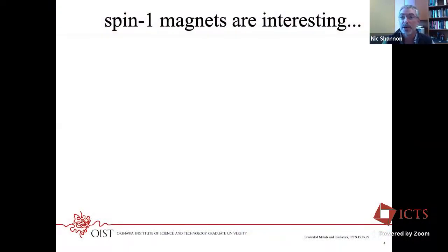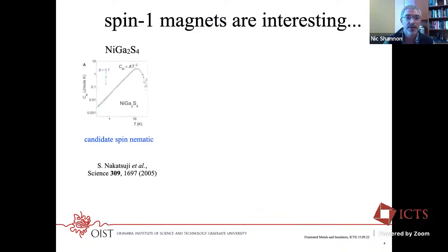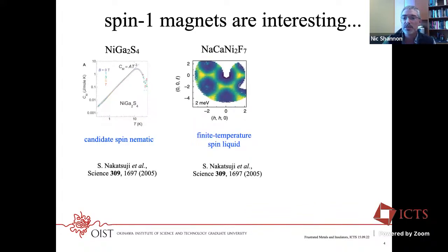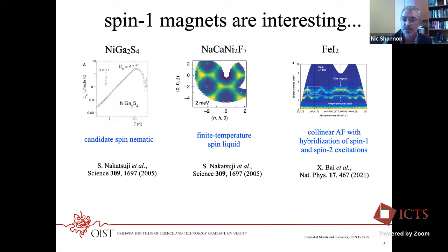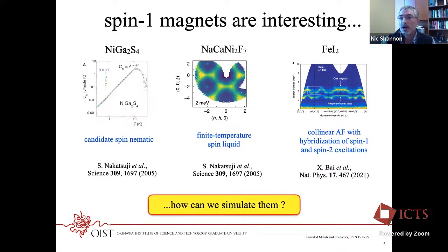Back to what I'm supposed to be talking about. Spin-one magnets are interesting. Here's a fairly well-celebrated example: a spin-one triangular ladder system offered as an early candidate for a spin nematic, showing a T-squared heat capacity at very low temperatures in the absence of obvious magnetic order. Here's a more recent, very interesting material — a nickel-based pyrochlore which shows spin liquid behavior with quite interesting dynamics above a spin-freezing temperature. And here's a highly documented example of a slightly more conventional magnet with a Néel-type ground state, but an interesting hybridization between spin-one and spin-two excitations.